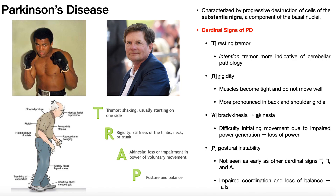Parkinson's disease is characterized as a progressive destruction of the cells of the substantia nigra. The substantia nigra is a piece of the basal nuclei, and it's responsible for generating a lot of dopamine. That dopamine is able to modulate the functions of both the direct and indirect pathways of the basal nuclei.